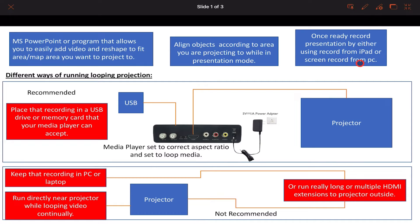I will go over how to record your final presentation so that you can put that into a USB or a memory card for your media player. My current setup is what I recommend — I have my final presentation on a USB inserted into my media player. Once you have the correct aspect ratio set up on your media player, you can set that file to loop continuously and just leave it alone once it's set up.